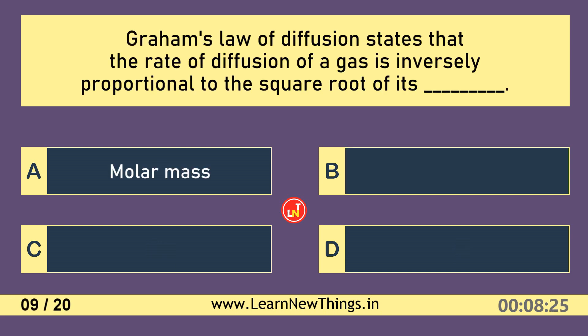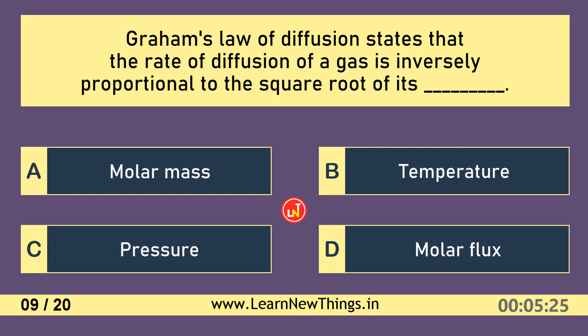Graham's law of diffusion states that the rate of diffusion of a gas is inversely proportional to the square root of its molar mass.